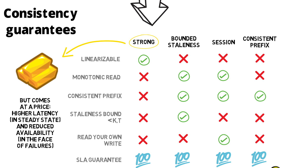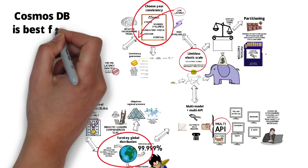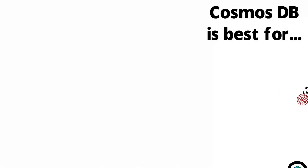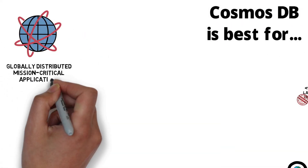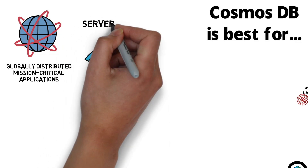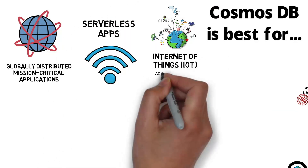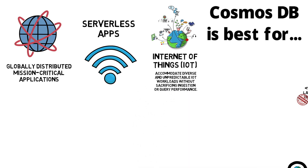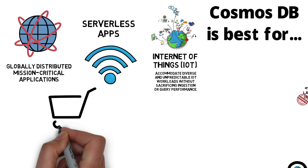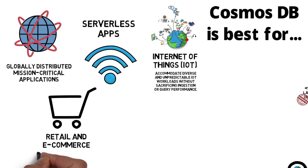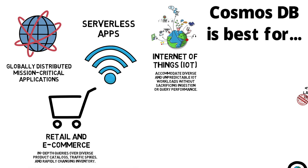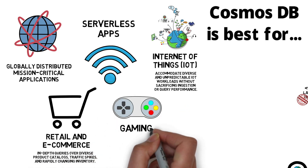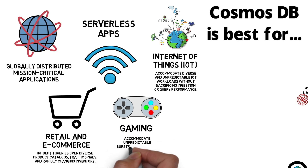We've learned a lot — let's look at what Cosmos DB is best for. We use Cosmos DB for globally distributed mission-critical applications, serverless apps, and Internet of Things workloads, accommodating diverse and unpredictable IoT traffic without sacrificing ingestion or query performance. In retail and commerce, it handles in-depth queries over diverse product catalogues, traffic spikes, and rapidly changing inventory. And for gaming, it's best at accommodating unpredictable bursts of traffic and delivering low-latency multiplayer experiences.